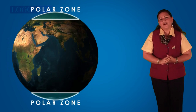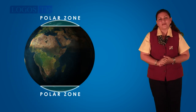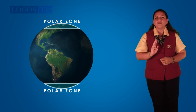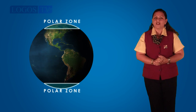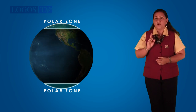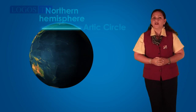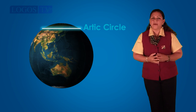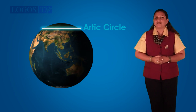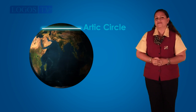Finally, the polar zones. There are two polar zones on the Earth. One is on the Northern Hemisphere, which is in the Arctic Circle, better known as the North Pole.